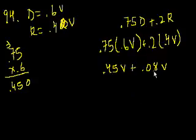0.45 plus 0.08, that's 0.53. 45 plus 8 is 0.53, or 53% of the voters are going to vote for candidate A. And that's choice B.